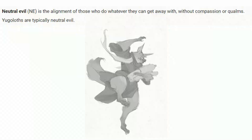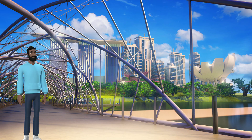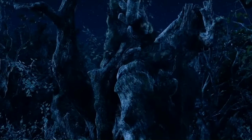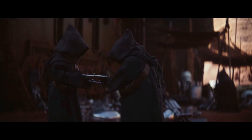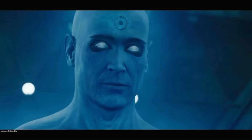According to the Player's Handbook, neutral evil is the alignment of those who do whatever they can get away with, without compassion or qualms. A prime example of this alignment would be the Ugoloths. But what does it mean to be both neutral and evil? Sitting at the center of the ethical axis, neutral characters neither strictly follow every rule nor seek to disrupt societal norms. They follow the rules when they align with their personal goals, find them convenient, or deem them necessary.